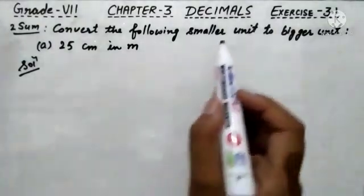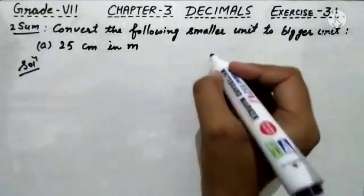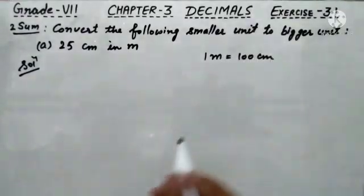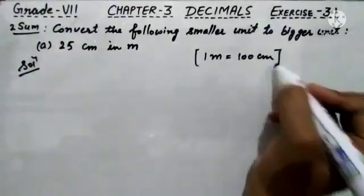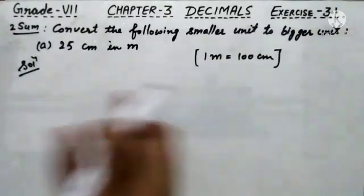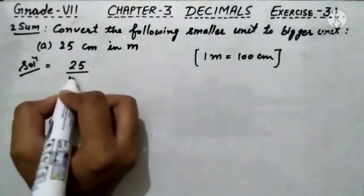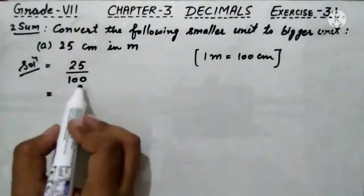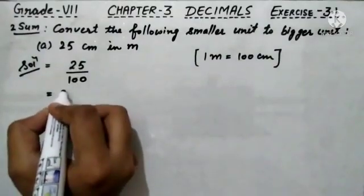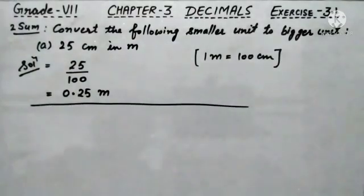As I told you previously, when we have to convert the smaller unit into the bigger term, we divide. The relation between meter and centimeter: 1 meter is equals to 100 centimeter. So we write 25 centimeter as 25 upon 100. Two zeros are given in the denominator, so we leave two digits in the numerator and place a decimal. Therefore, 0.25 meter is the required answer of second sum A part.